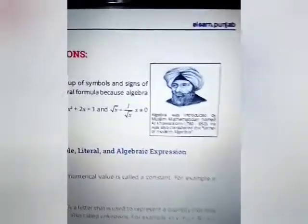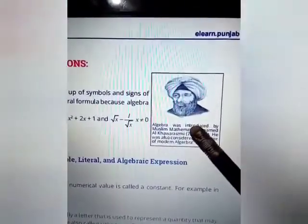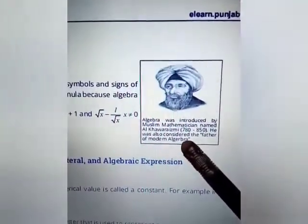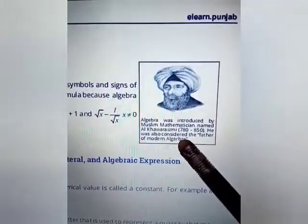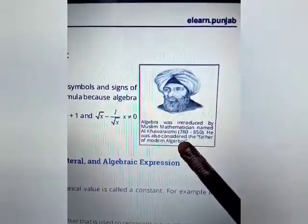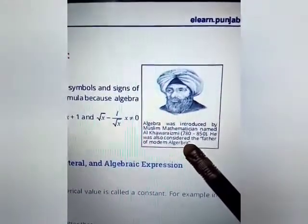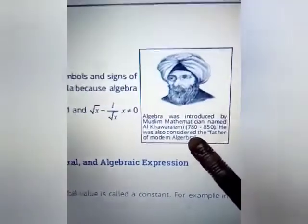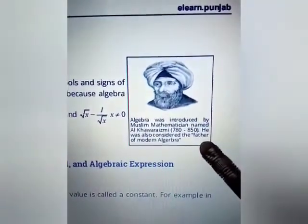Turn to the next page. On the next page you see a little box. This box is about Al-Khwarizmi, who was known as the father of modern algebra. He is a Muslim scientist, a Muslim mathematician, and he contributed a lot to algebra.